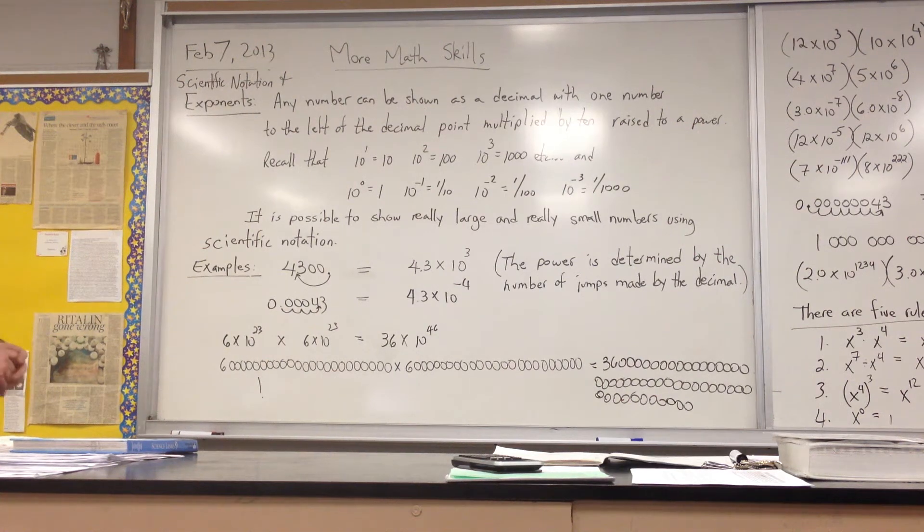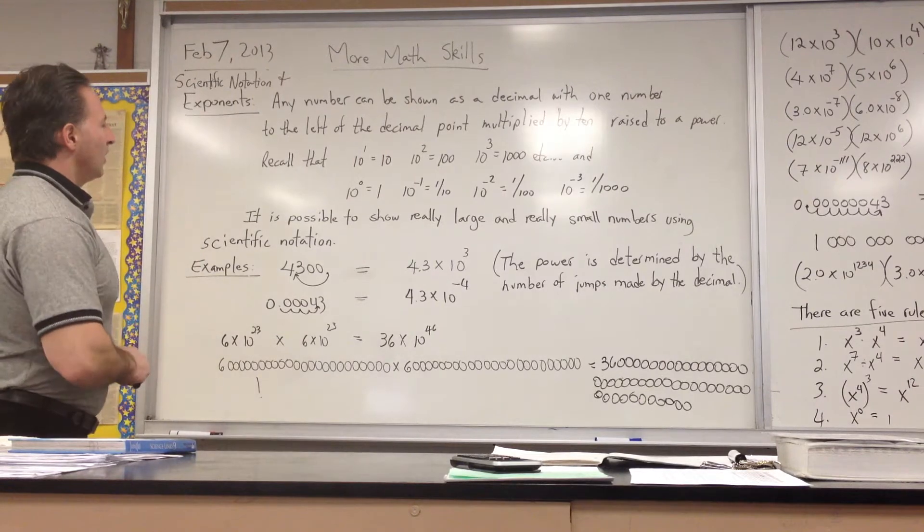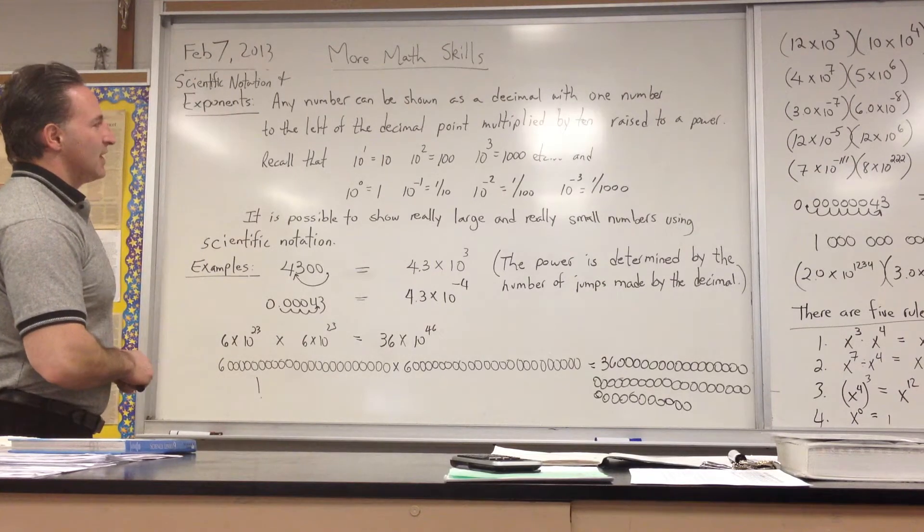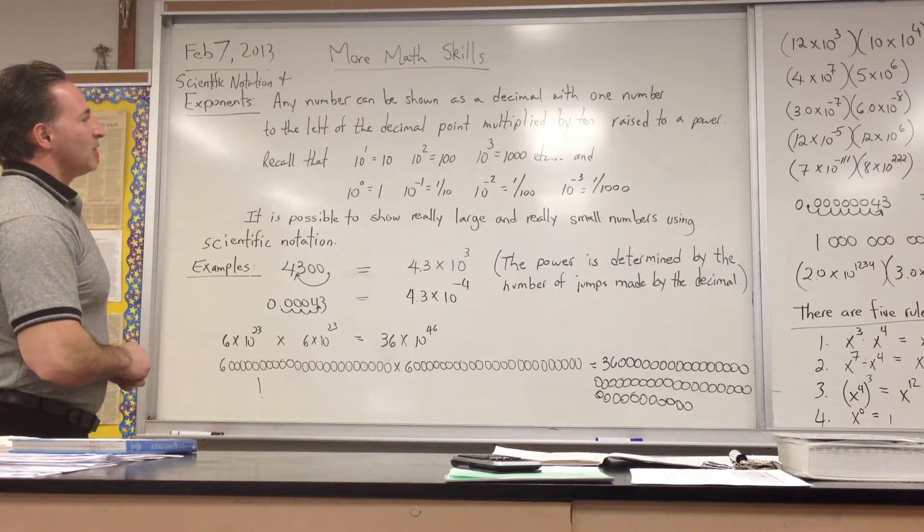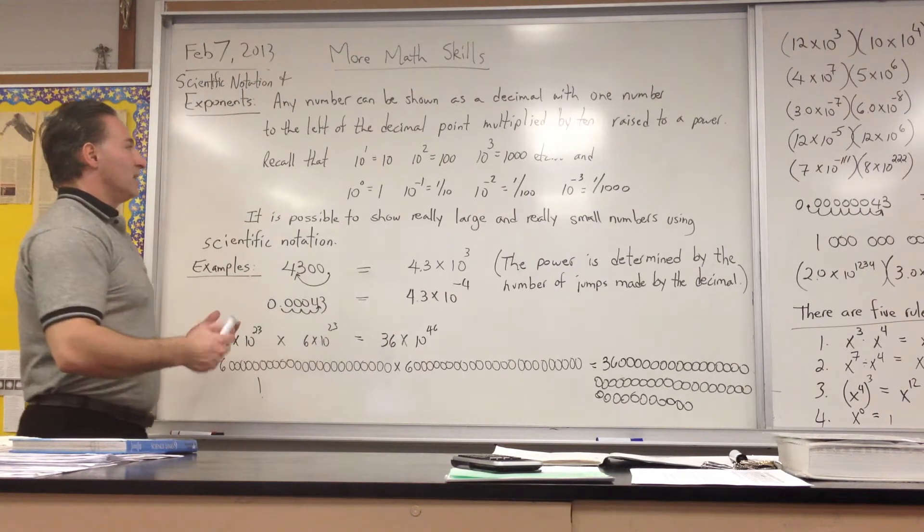Okay, today's class we're going to go over scientific notation and exponents. Any number can be shown as a decimal with one number to the left of the decimal point multiplied by 10 raised to a power. That's called scientific notation.